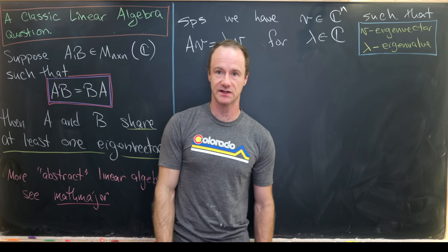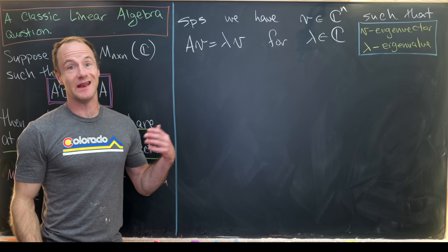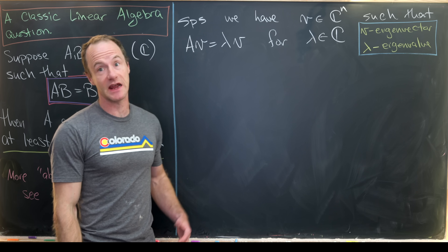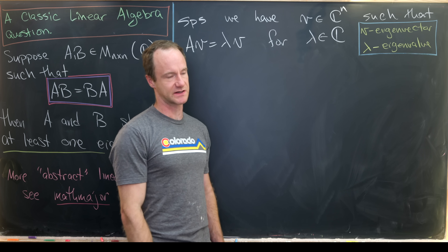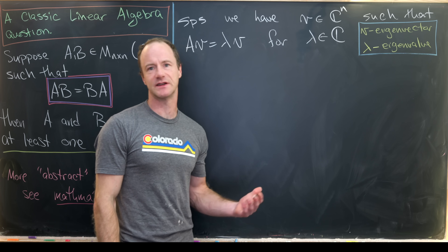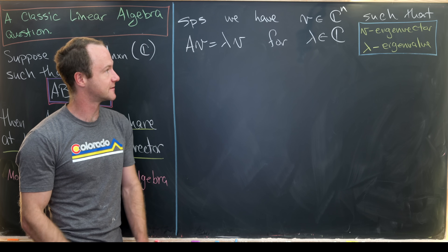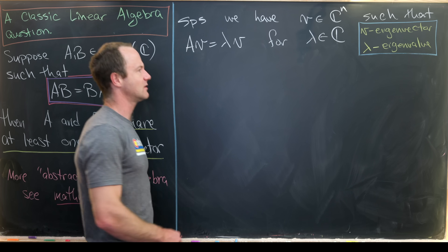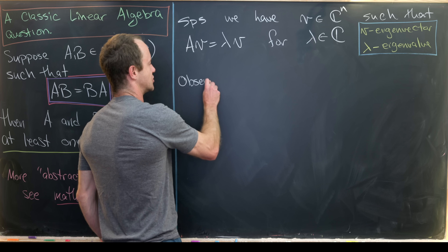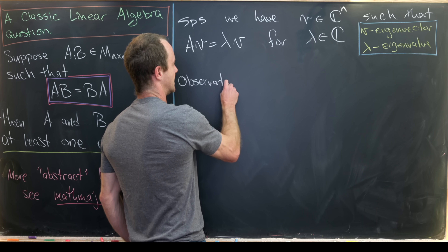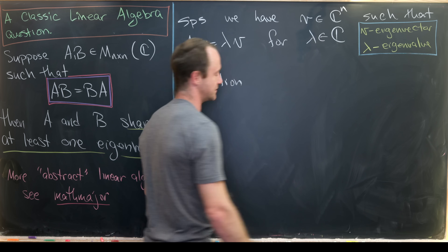One reason we're working over the complex numbers is that a real n-by-n matrix might not have any eigenvectors within the real numbers — you'd have to spill over into the complex numbers. A standard example of that would be two-by-two rotation matrices. Our only given here is that AB equals BA.